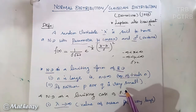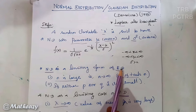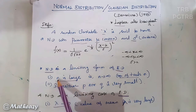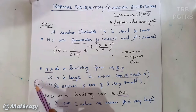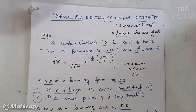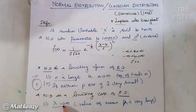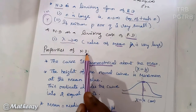Normal distribution is a limiting form of the binomial distribution as n tends to infinity, where n is the number of trials, provided neither p nor q is very small. This is a very important point. Also, normal distribution is a limiting form of the Poisson distribution where lambda tends to infinity, where lambda is the mean.